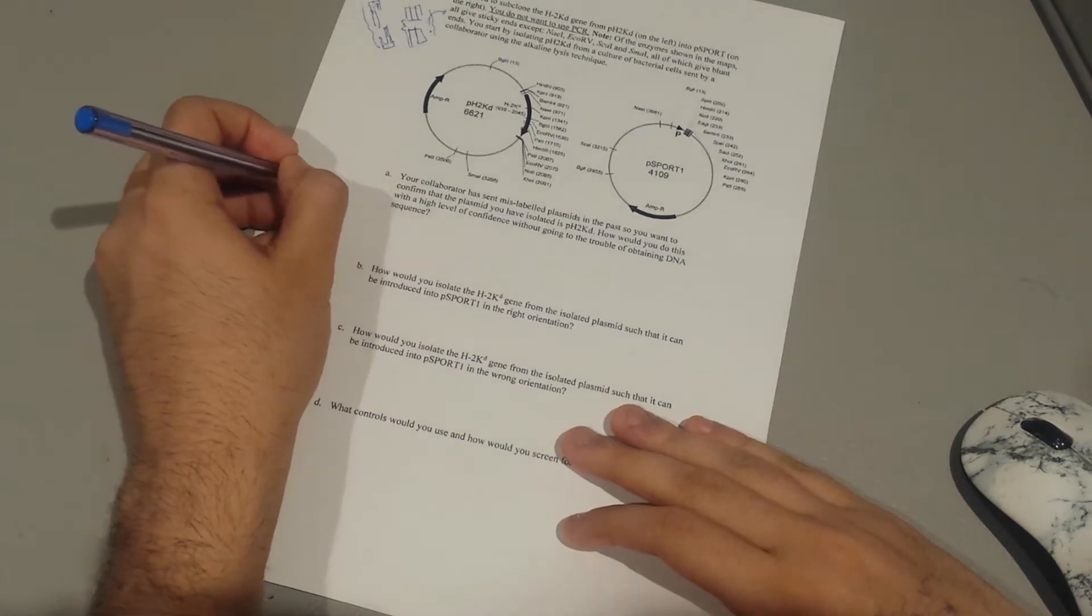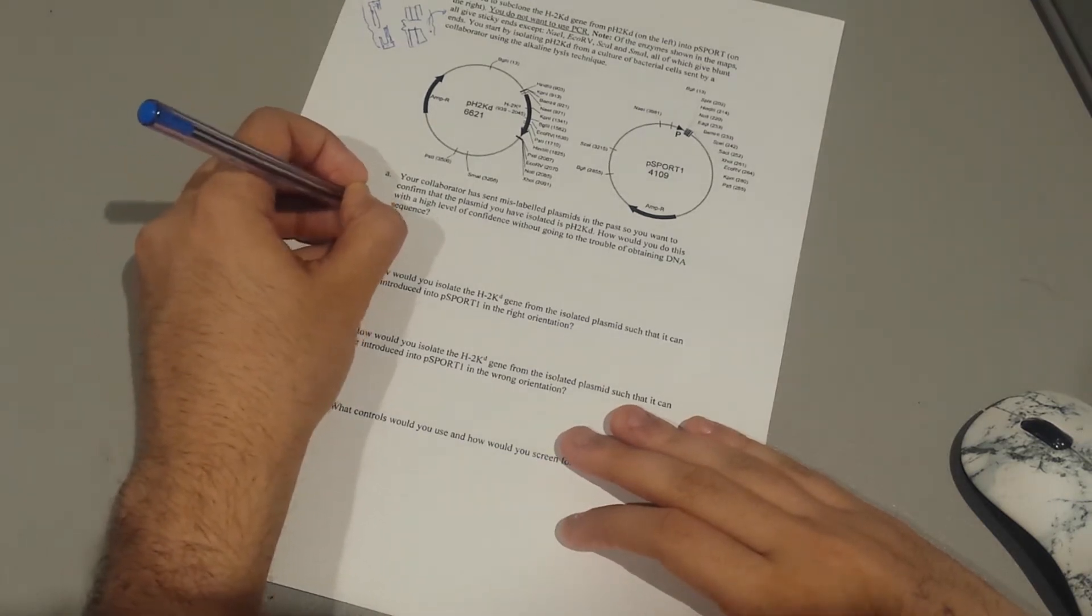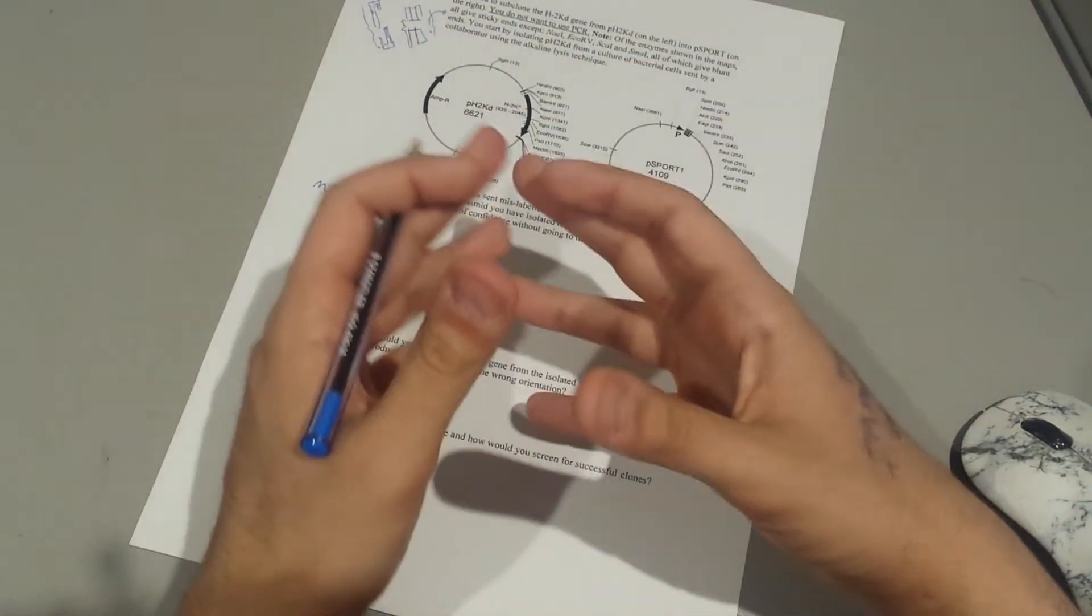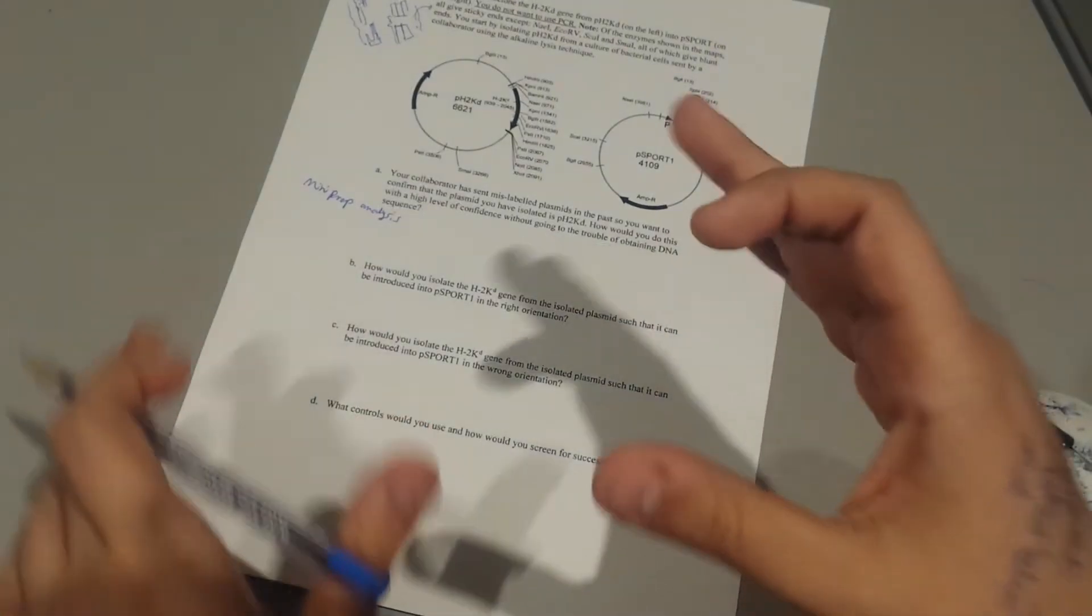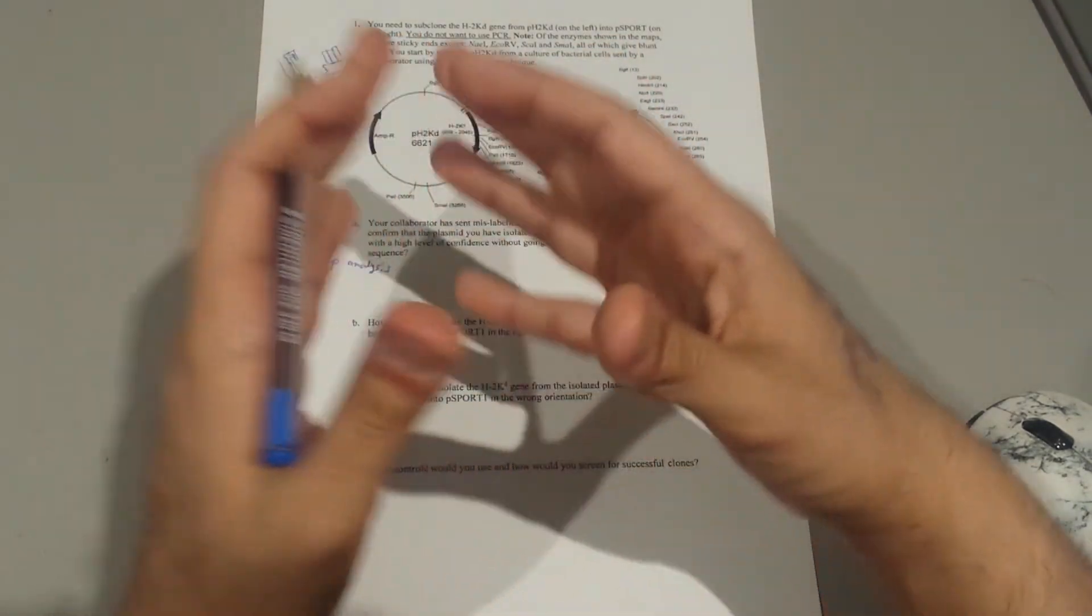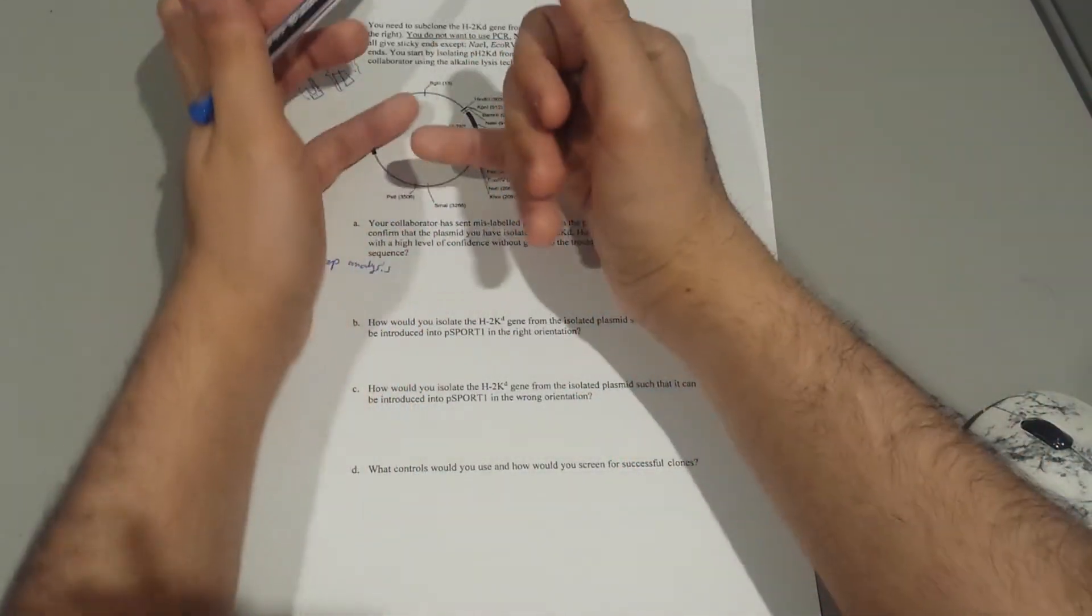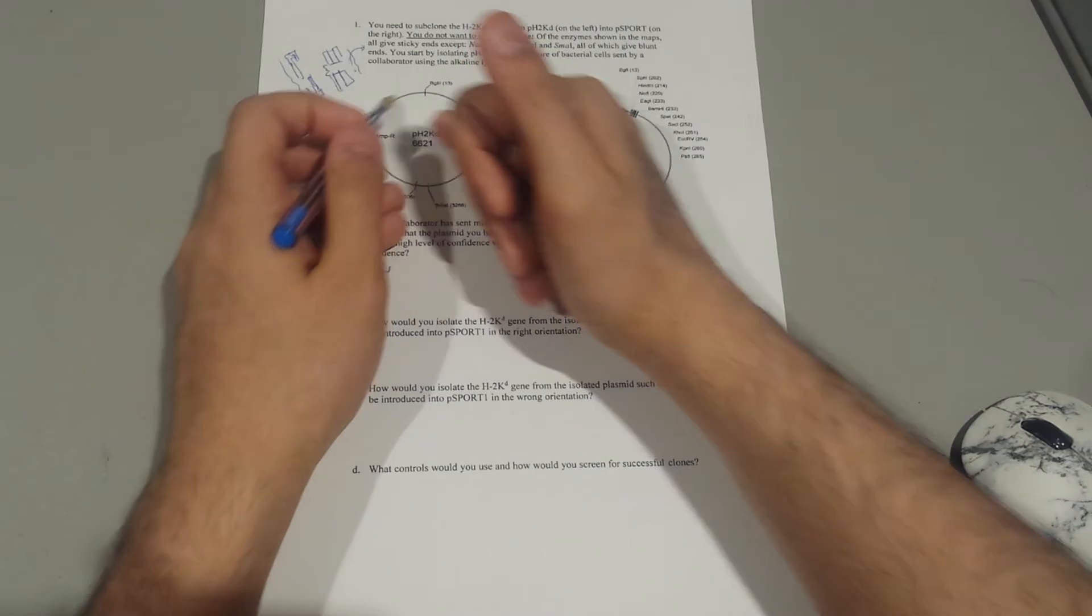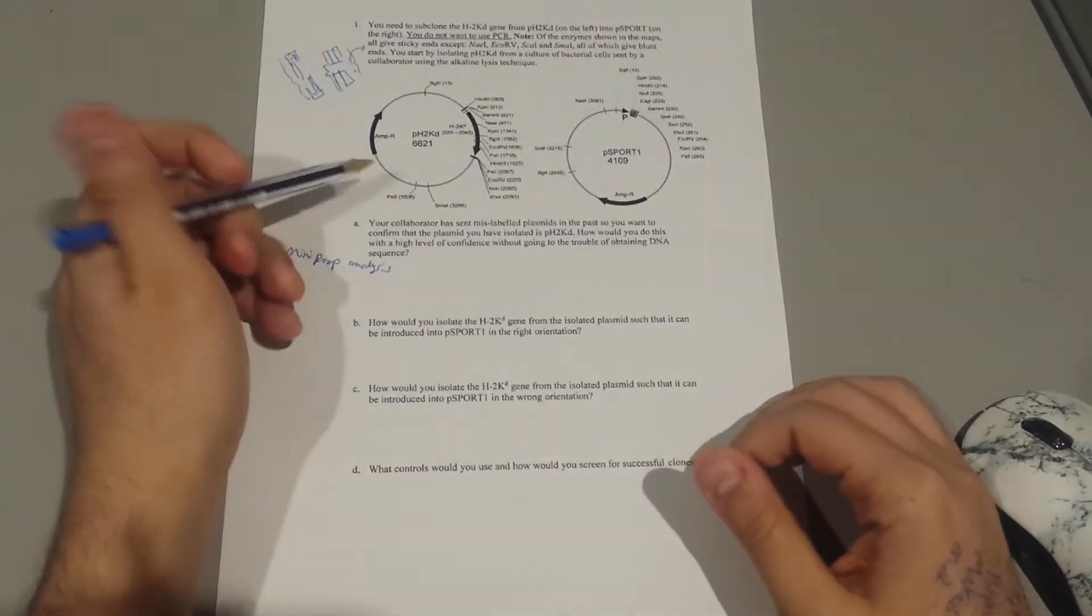I would do mini prep analysis, meaning I would cut this plasmid with specific restriction endonucleases. Using those enzymes, they would give me specific fragments, and I'd run that from gel electrophoresis. Based upon the fragment size I'm observing versus the theoretical fragment size, I would compare, and if they match, then that's confirmed.